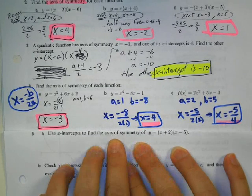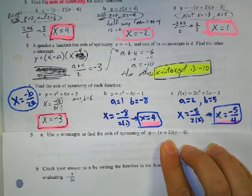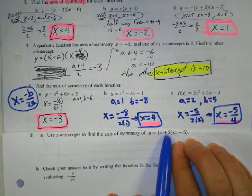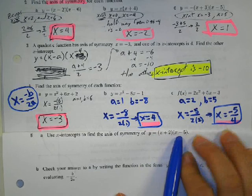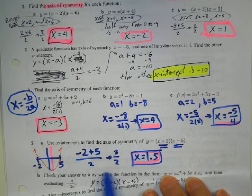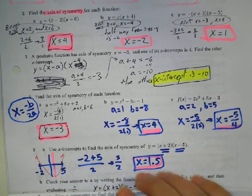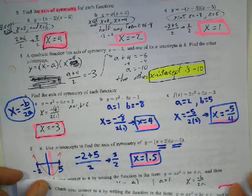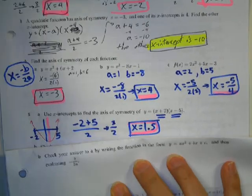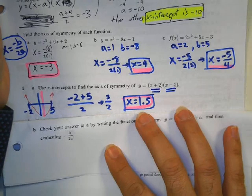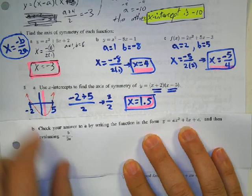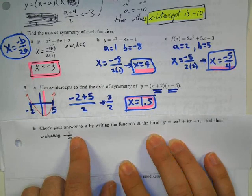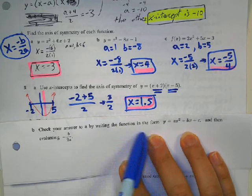Use the x-intercepts to find the axis of symmetry. One x-intercept is negative 2, the other is 5. Take the average between those two to get the axis of symmetry. Question B is very interesting — we're going to show that both ways of finding the axis of symmetry give the same equation, writing the function in standard form and then evaluating negative b over 2a.